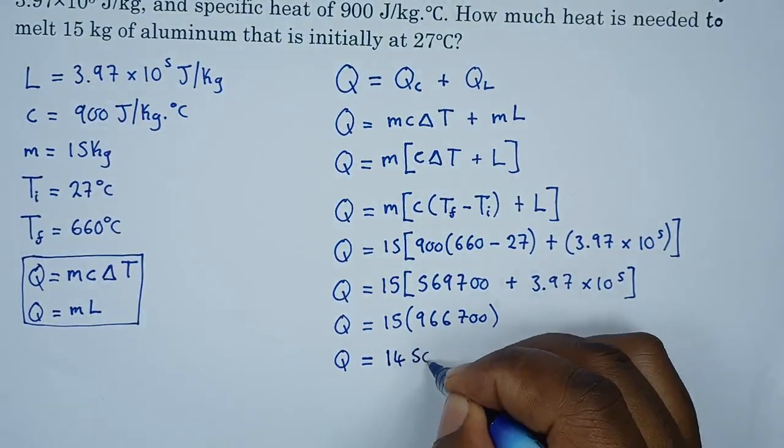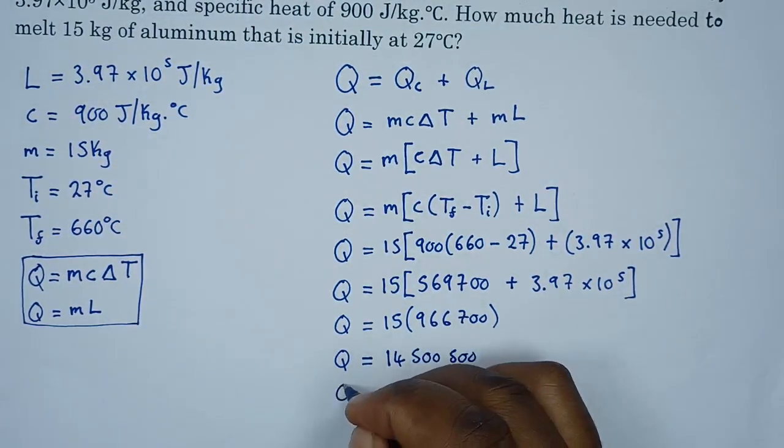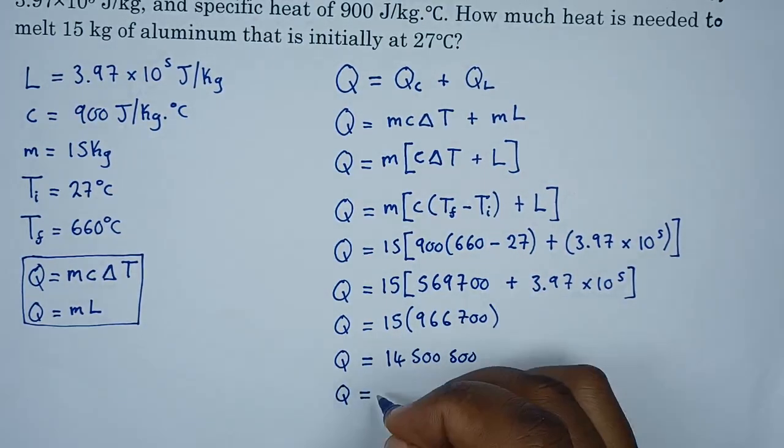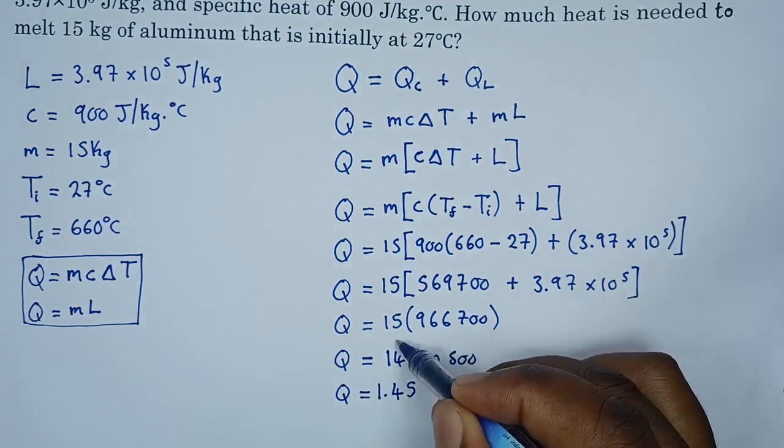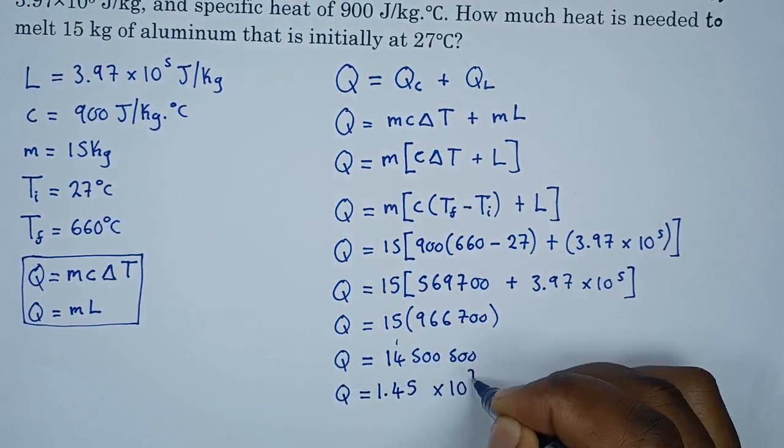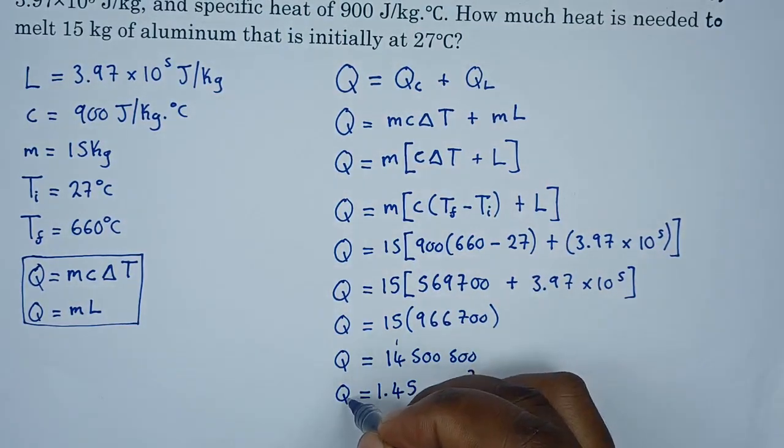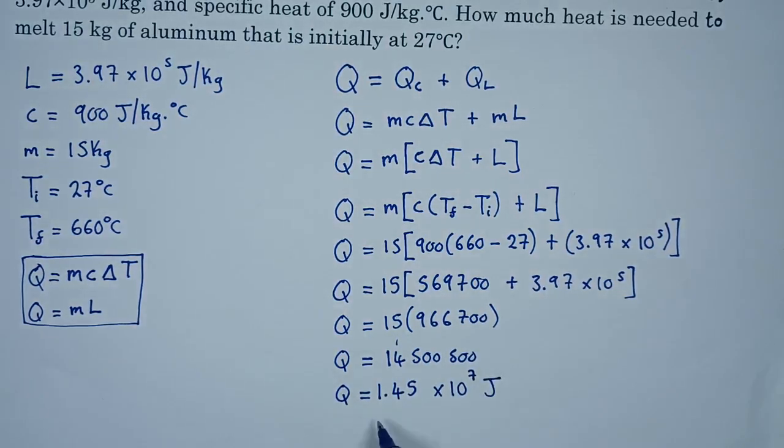Let's put it in standard form. So the energy can be written as 1.45, so how many decimals? 1, 2, 3, 4, 5, 6, 7. Seven places, so times 10 to the power of 7. This is energy, hence joules. So that's our answer.